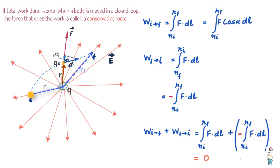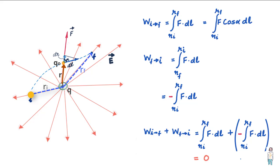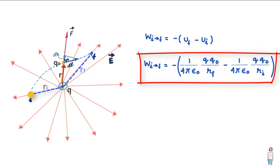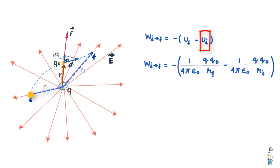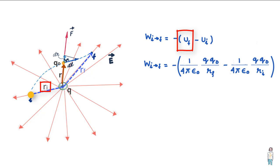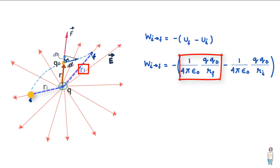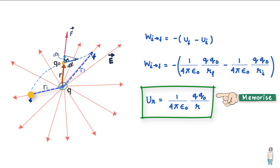Since the electric force is conservative, it gives us an opportunity to link the change in potential energy with work done. Comparing the equations, we can say that the potential energy U_i equals QQ naught divided by 4π epsilon R_I when Q naught is at distance R_I from Q, and U_F equals QQ naught divided by 4π epsilon R_F. More generally, the potential energy U when charge Q naught is at any distance R can be written as U equals 1 upon 4π epsilon times QQ naught divided by R.